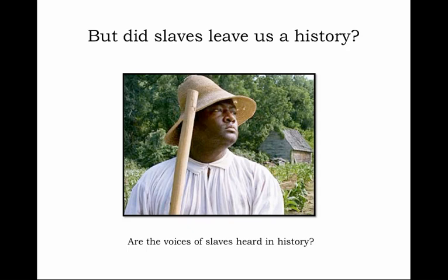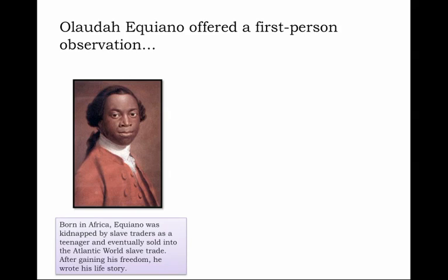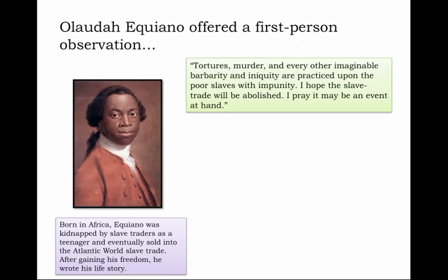Some of these voices are more familiar to us, more recognizable, because they were committed to print in traditional ways, found in volumes such as Olaudah Equiano's first-person memoir. Born in Africa, Equiano was kidnapped by slave traders as a teenager and eventually sold into the Atlantic world's slave trade — a slave trade that he remembered for its 'tortures, murder, and every other imaginable barbarity and iniquity practiced upon the poor slaves with impunity. I hope the slave trade will be abolished,' wrote Equiano. 'I pray it may be an event at hand.'